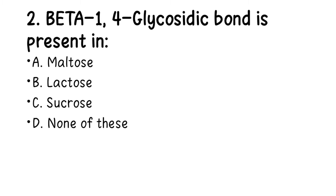Number 2. Beta-1,4 glycosidic bond is present in: A. Maltose, B. Lactose, C. Sucrose, D. None of the above. The right answer is lactose. Lactose contains a beta-1,4 glycosidic bond.